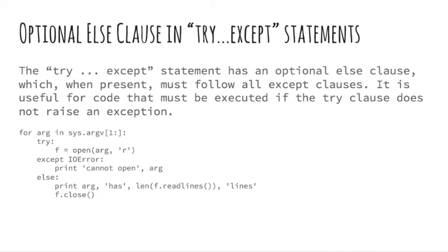When an exception occurs, it may have an associated value, also known as the exception's argument. The presence and type of the arguments depend on the exception type. The except clause may specify a variable after the exception name or tuple. The variable is bound to an exception instance with the arguments stored in instance.args. For convenience, the exception instance defines __str__ so the arguments can be printed directly without having to reference .args. One may also instantiate an exception first before raising it and add any attributes to it as desired.